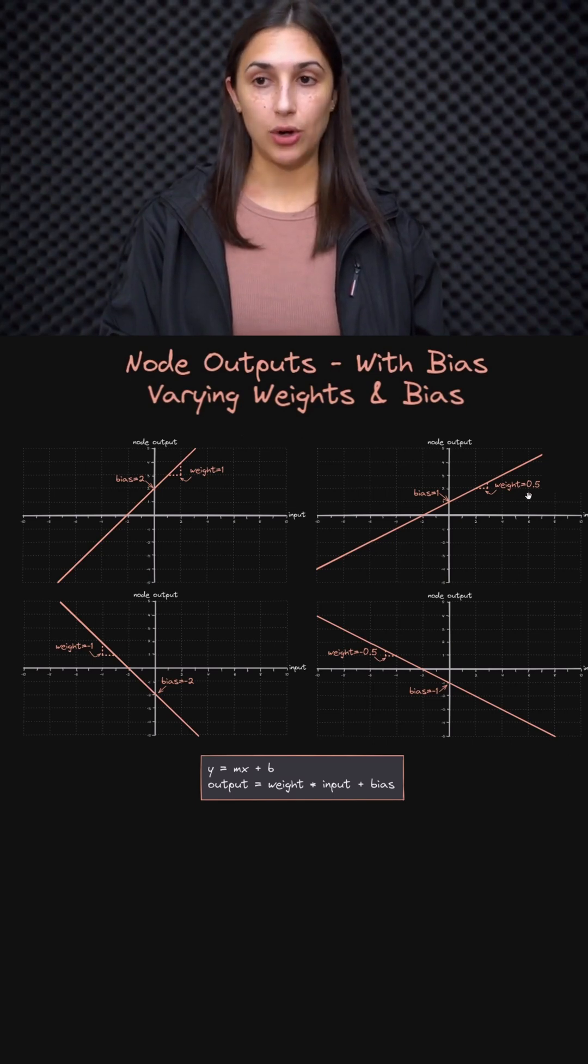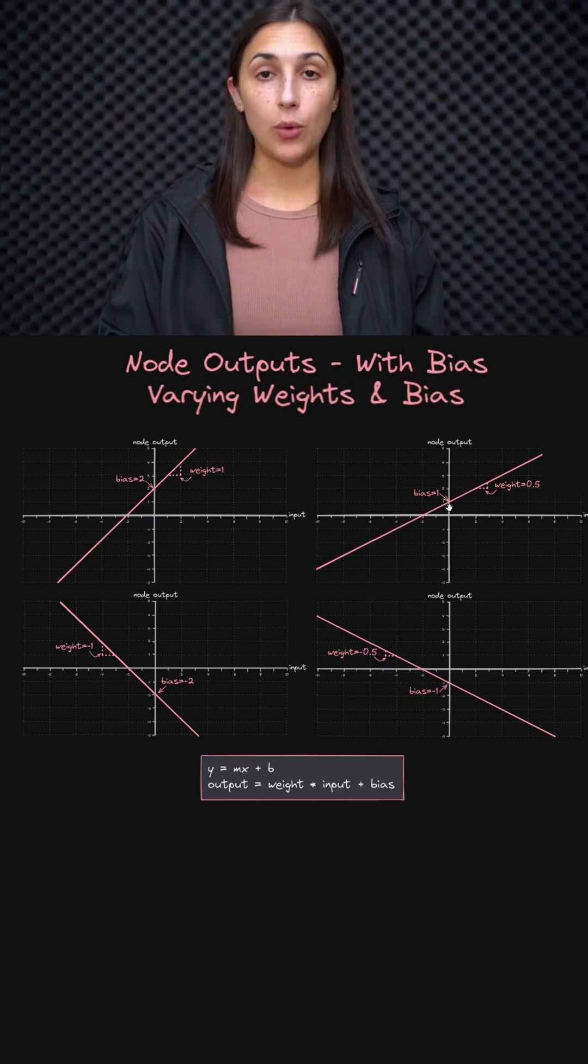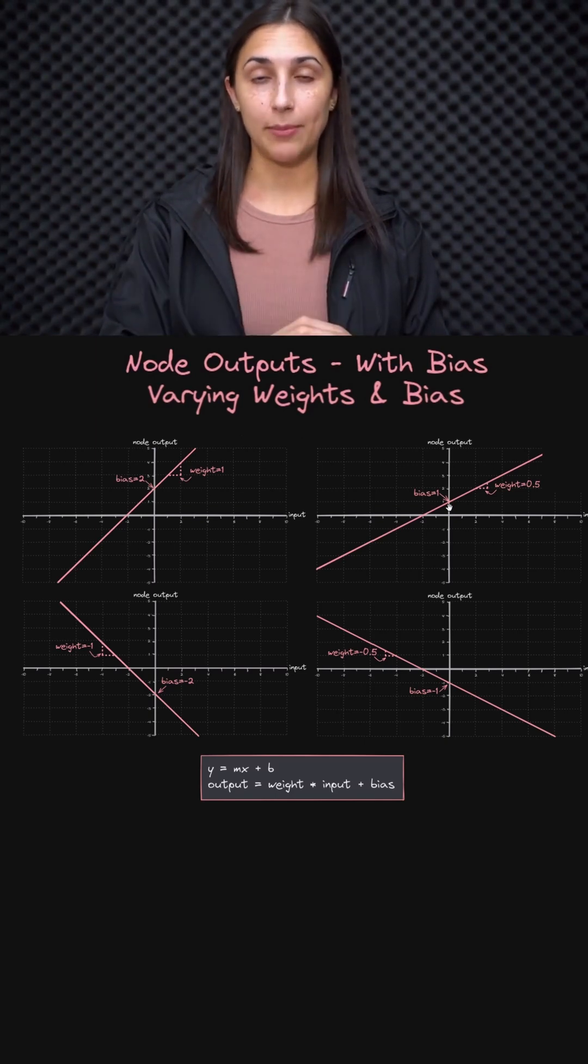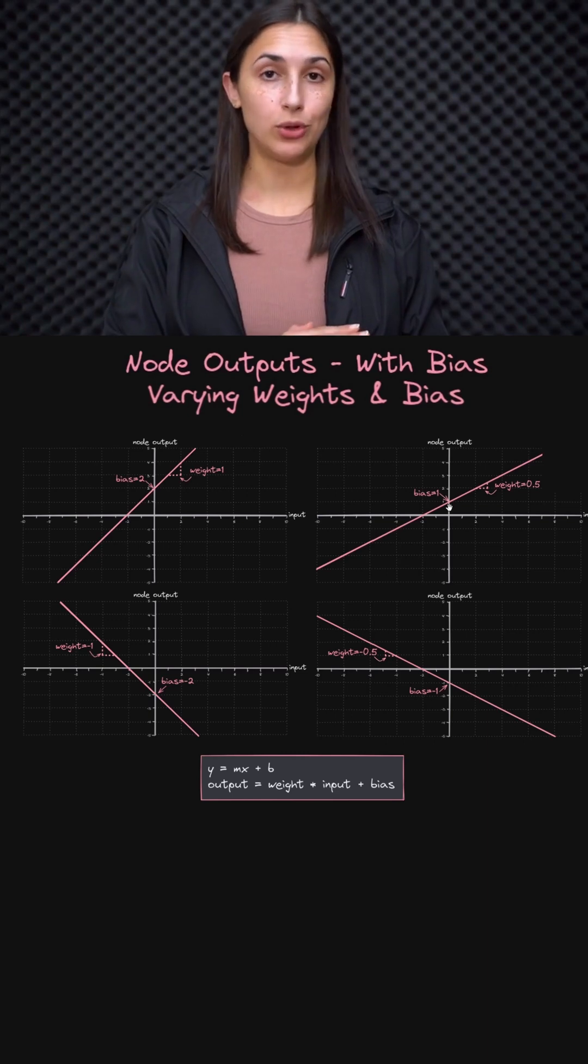So we've already discussed how the weight determines the slope of the output line. And now we should also be able to see that the bias term determines the y-intercept of the line. So when we vary the weight, we're able to change the slope and the direction of the line of the output. And when we vary the bias term, we're able to change where on the y-axis the line intercepts it.